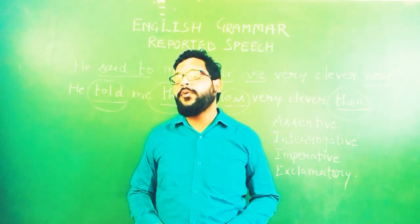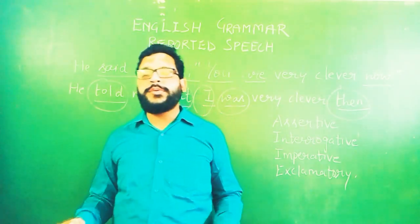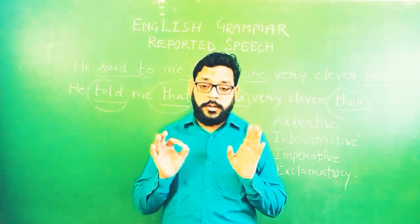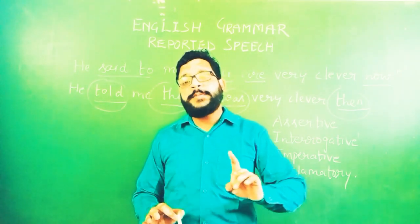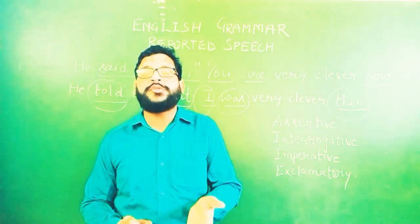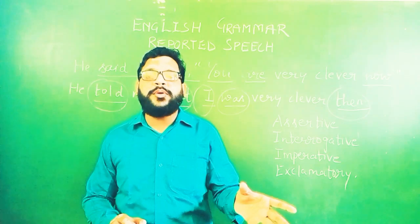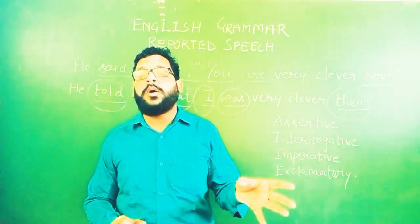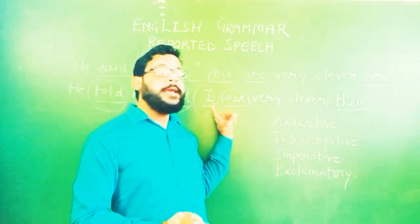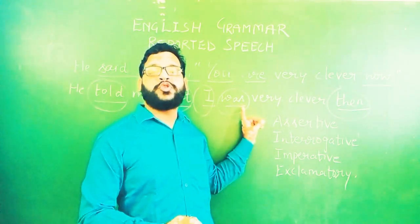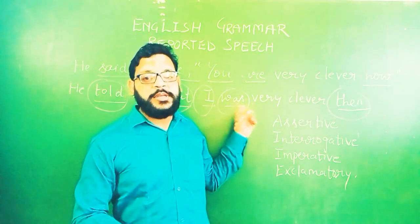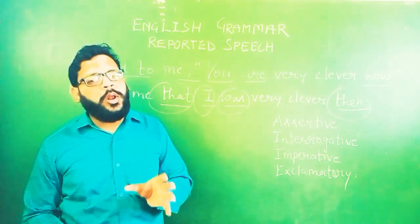For future tense, it is very simple: wherever there is 'will' it becomes 'would', and wherever there is 'shall' it becomes 'should'. We should be careful: it is a rule that only 'I' and 'we' will use 'shall'. So when there is a change in pronoun during direct-to-indirect conversion, 'would' or 'should' will be used according to the pronoun that results — if the pronoun is 'I', use 'should'; if it is 'he', use 'would'.